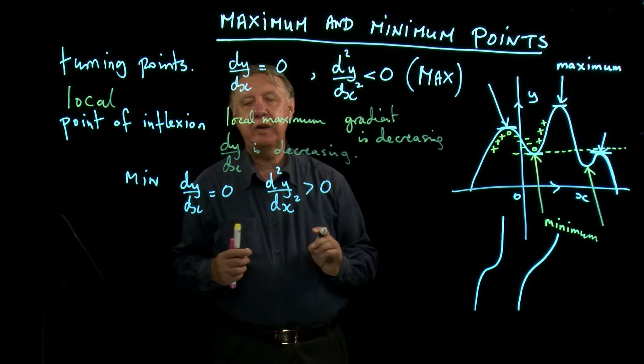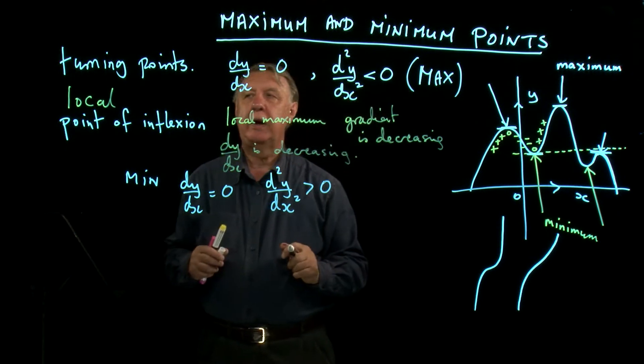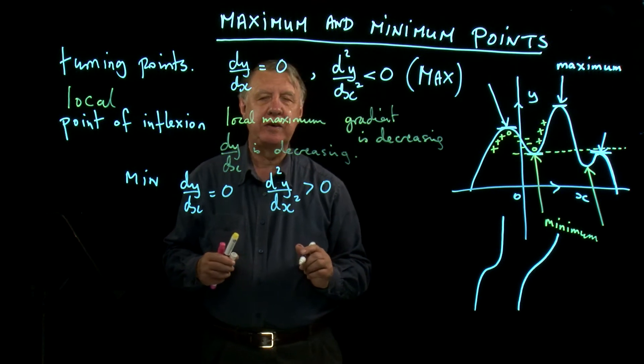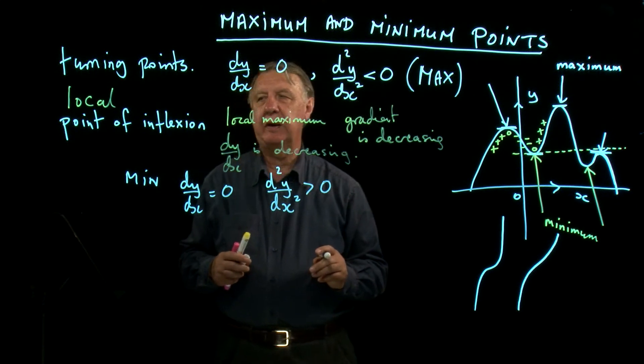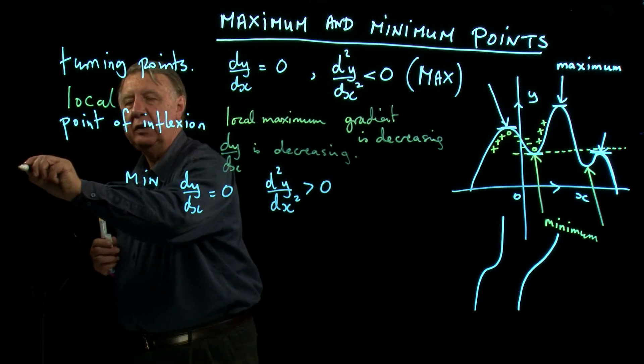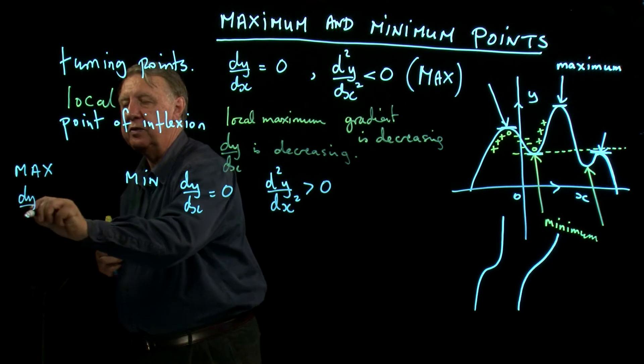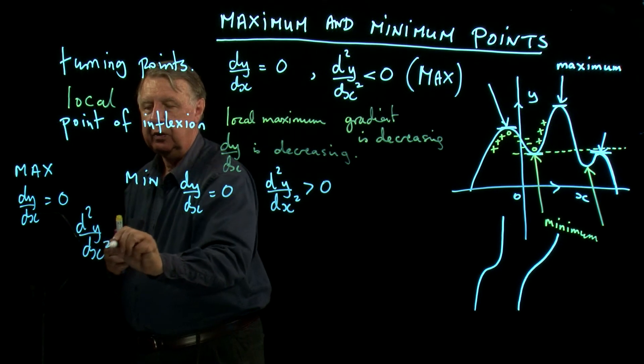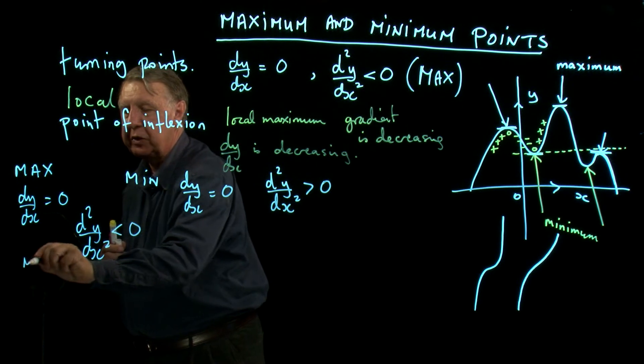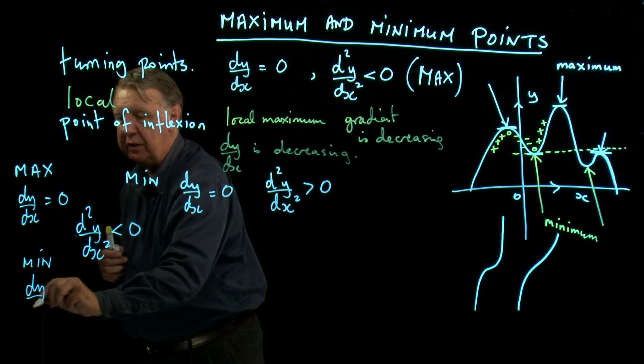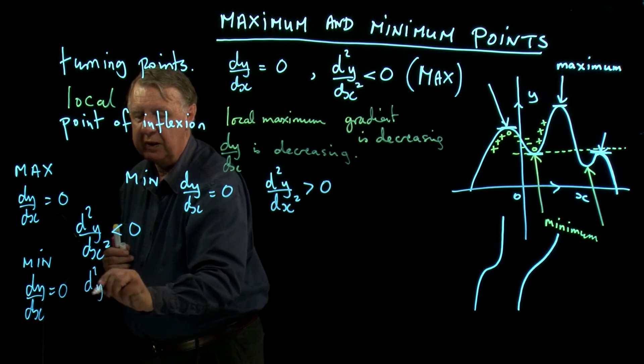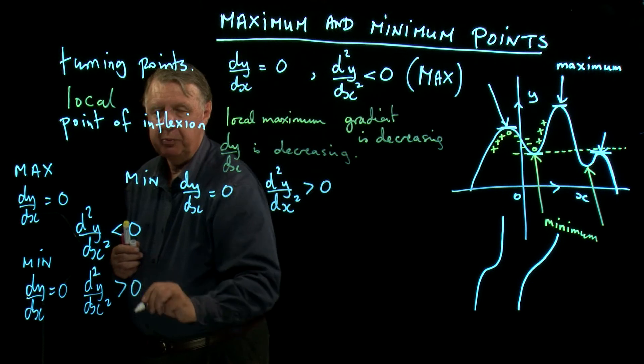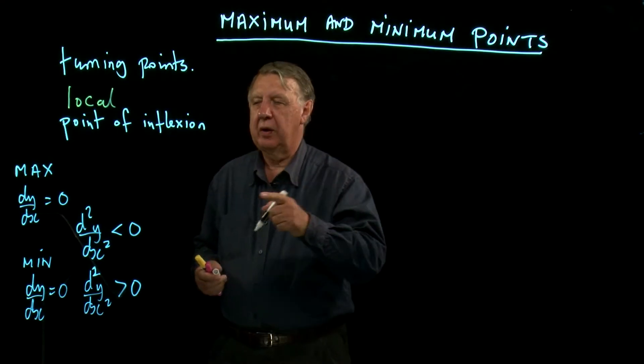So let's see then how we use these two rules in order to solve a problem—not a particularly complicated problem, but a problem that requires some thinking. We'll just write the rules down. So at a maximum, dy/dx = 0 and d²y/dx² is negative. And at a minimum, dy/dx = 0 and d²y/dx² is positive. Right, so we've got the rules there.